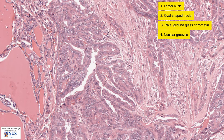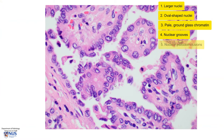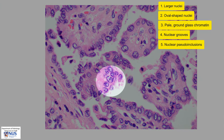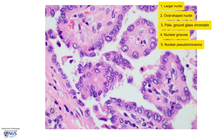Yet another nuclear feature is the presence of nuclear pseudoinclusions. Within this nucleus, we can see that there is a little island of cytoplasm which looks pink, the same as the cytoplasm of the cell. We see yet another nuclear pseudoinclusion within the nucleus, and another one here. These nuclear pseudoinclusions occur because of folding of the nuclear membranes — they tend to invaginate and fall inwards, and hence they appear to pick up a little island of cytoplasm.